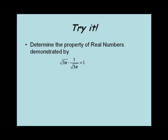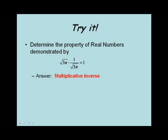Let's try another one. Which property is illustrated by the equation square root of 3 pi times 1 over the square root of 3 pi equals 1? And this is the multiplicative inverse property.